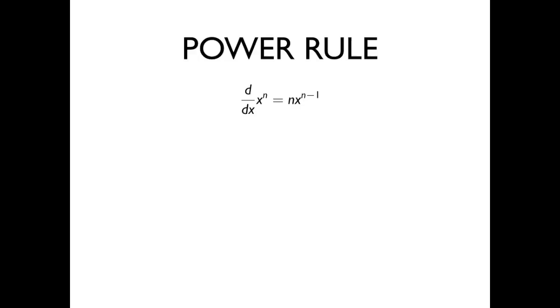You can think of the power rule as having two steps. The first is to pull down the exponent. So if we have x to the n, we look at the exponent and we bring it down as a coefficient, so that we have n times x to the n.